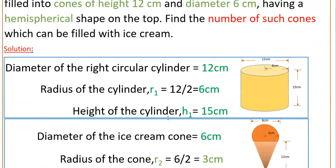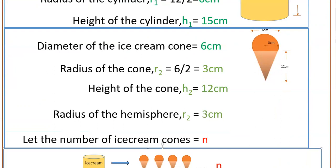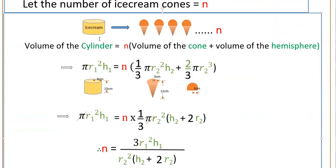Here we have to find the number of such cones which can be filled with ice cream. So let the number of ice cream cones be equal to n. The volume of the cylinder is equal to n into the volume of this ice cream cone. This ice cream cone volume includes the volume of the cone plus the volume of the hemisphere, so you have to add both.